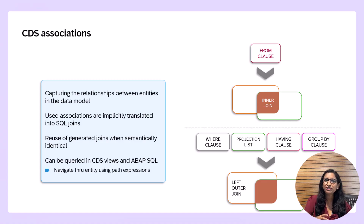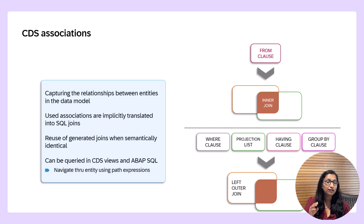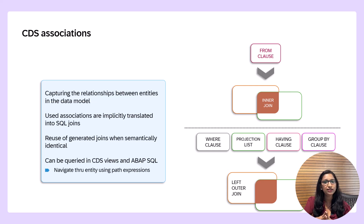Association defines the relationship between two or more entities. This will help you to easily navigate, query, and access related data. To define an association, all you need is an association source and one or more association targets. Association targets can be CDS view entities, CDS projection views, CDS table functions, SQL views, and database tables. The recommendation is to use CDS view entities and CDS projection views.